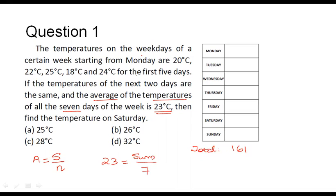In the question it is given that the temperatures on the weekdays of a certain week, starting from Monday, are: Monday = 20°C, Tuesday = 22°C, Wednesday = 25°C, Thursday = 18°C, and Friday = 24°C.